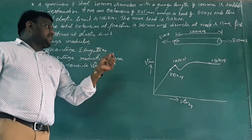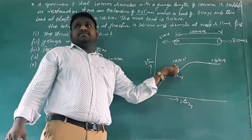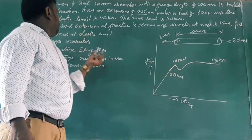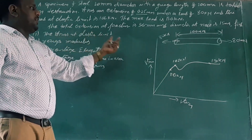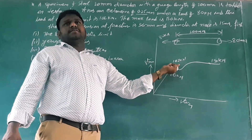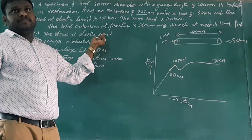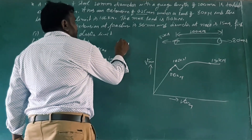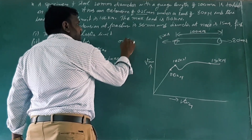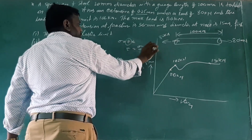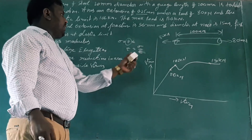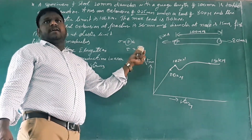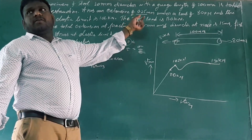We need to find the stress at the elastic limit. The cross-sectional area is pi by 4 times diameter squared. The stress at the elastic limit equals force divided by area. The values calculated give stress at the elastic limit and at other points using the same formula, with values coming out to approximately 3.5 N/mm² and 4.5 N/mm² respectively.